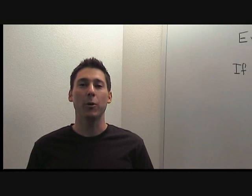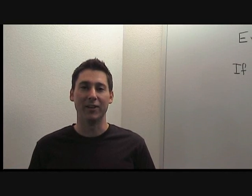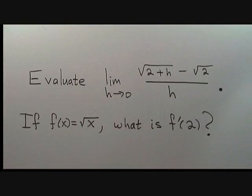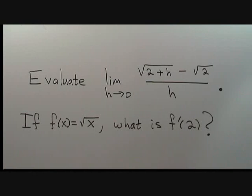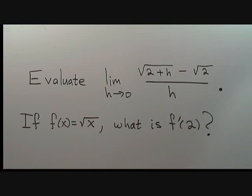This problem is about evaluating the limit of a difference quotient. Evaluate the limit as h goes to zero of the square root of 2 plus h minus the square root of 2, all over h. If f of x is equal to the square root of x, what is f prime of 2?